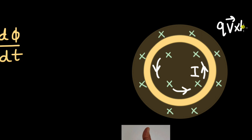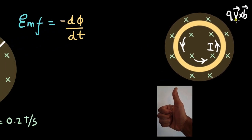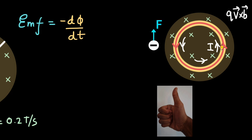If there is a current, there must be some force on the electrons in the coil. Since the coil is not moving, it cannot be a Lorentz force — that was QV×B, and with no velocity there is no such force. The force pushing the electrons is provided by the electric field. The direction of this induced electric field will also be anti-clockwise, because the current is anti-clockwise, meaning electrons move clockwise, and the electric field must be opposite to that direction since the force on the electron is opposite to the electric field.